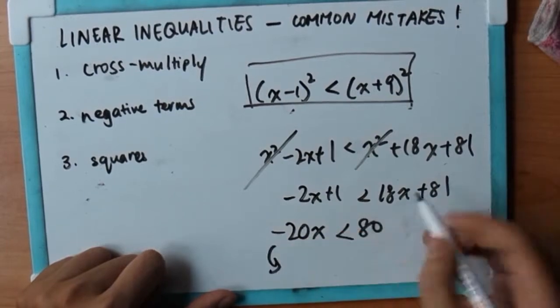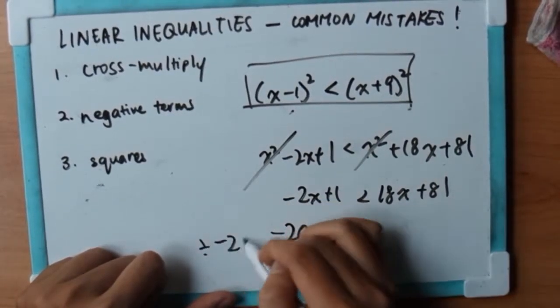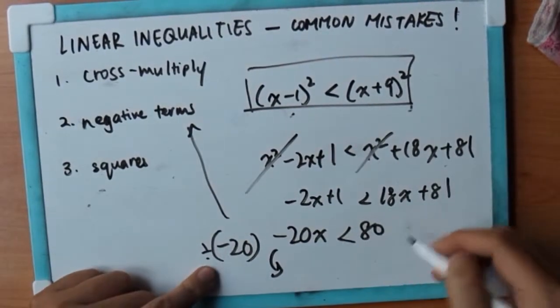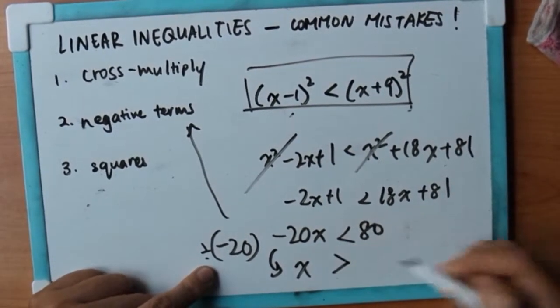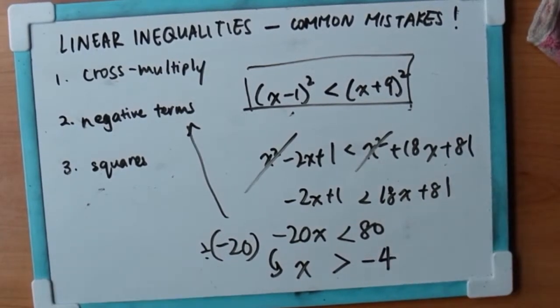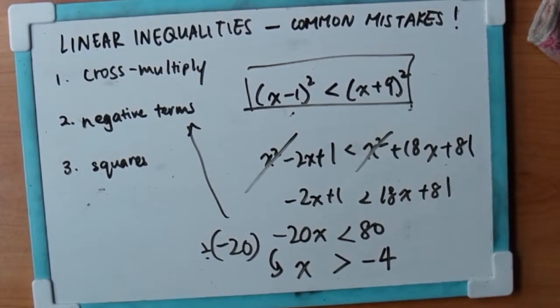So now, what do I do? I divide by negative 20, right? So again, remember, negative times. So divide by negative 20, I get x. Yes, but it has to be more than negative 4. So that's my final answer and that's all for today.